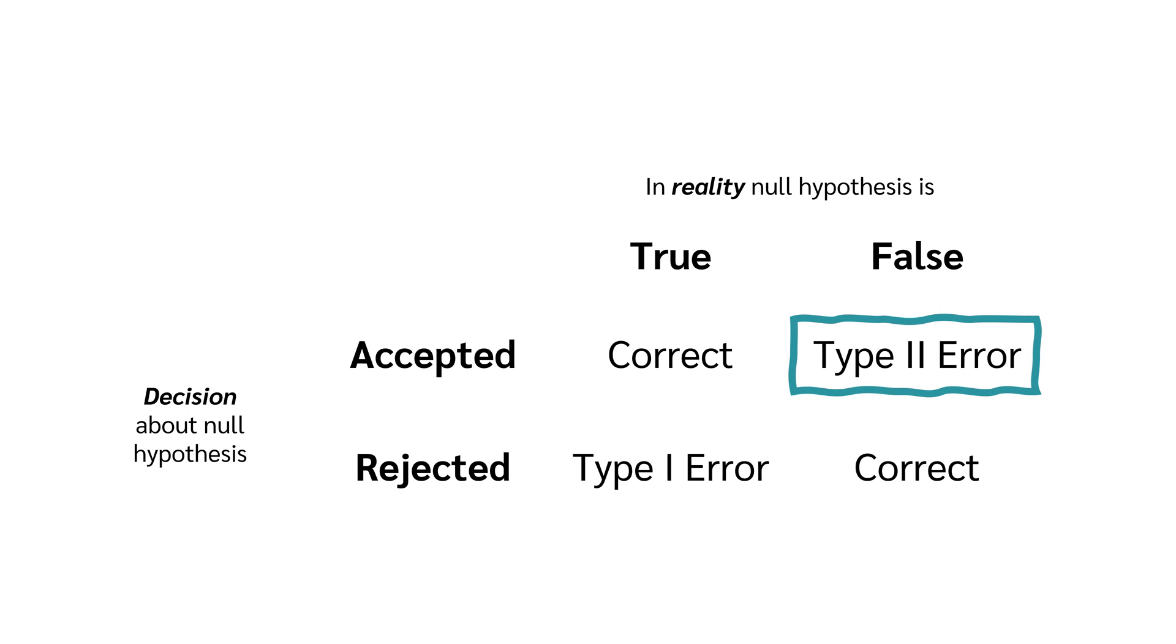And a type 2 error occurs when a false null hypothesis is not rejected. So, in reality, the null hypothesis is false, but we make the decision not to reject the null hypothesis.